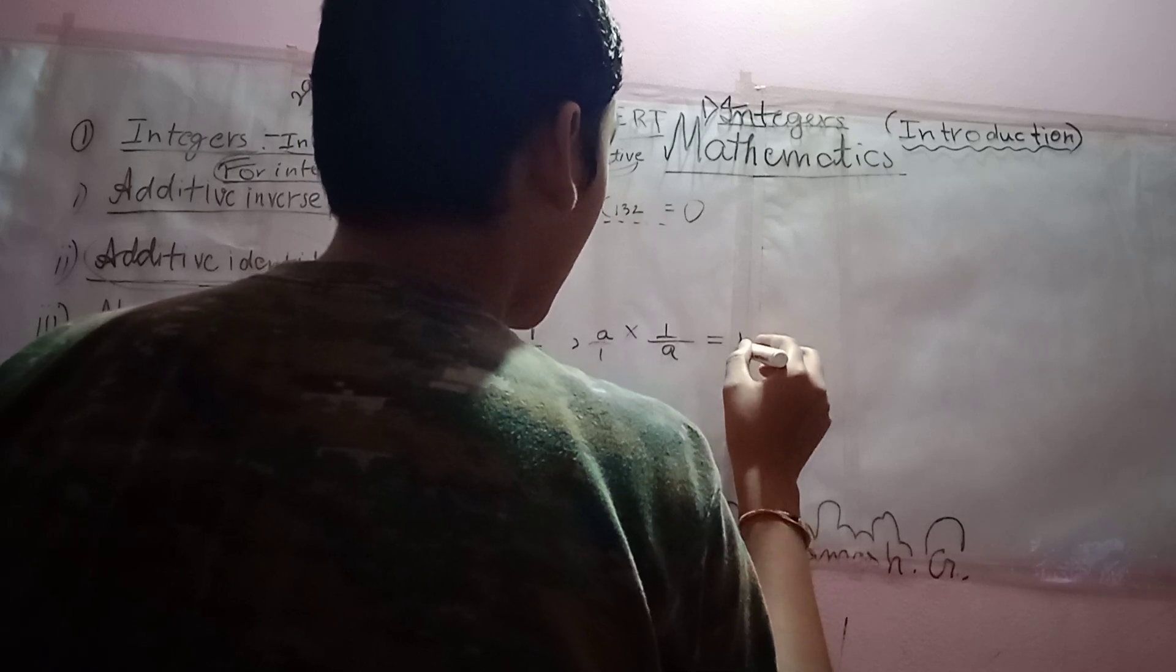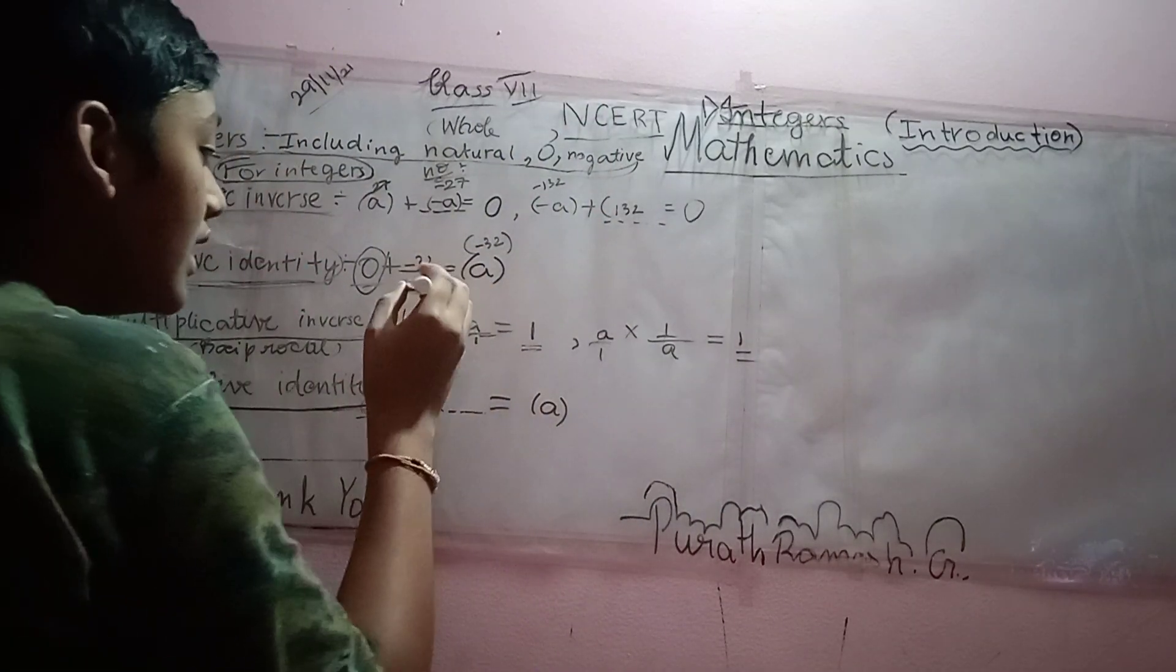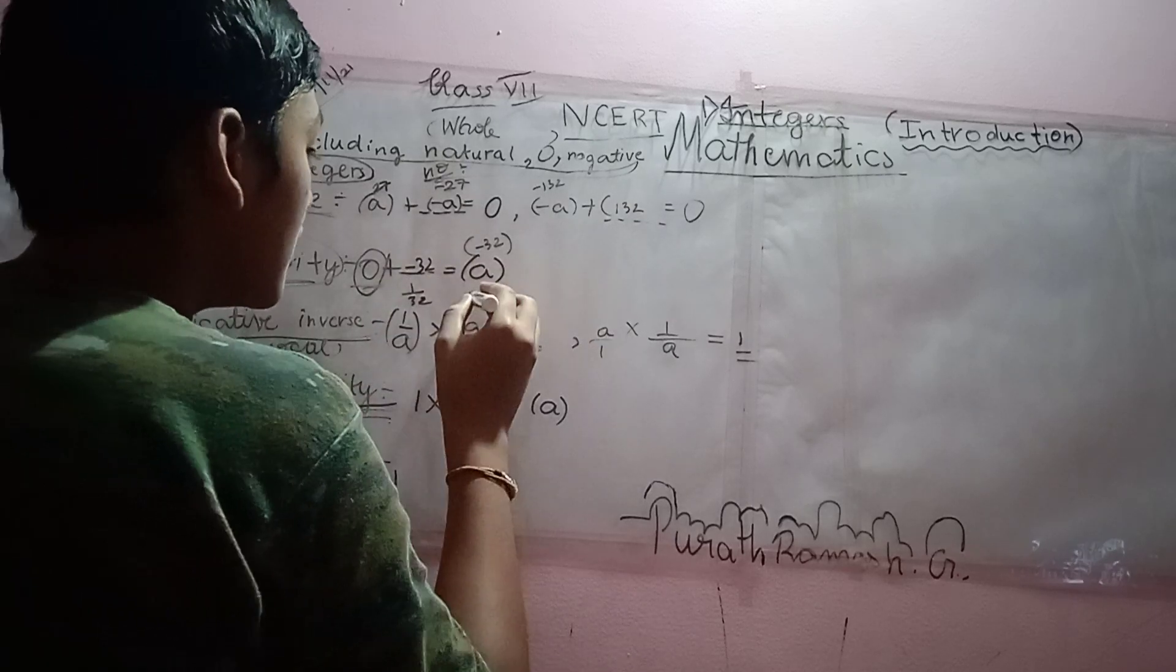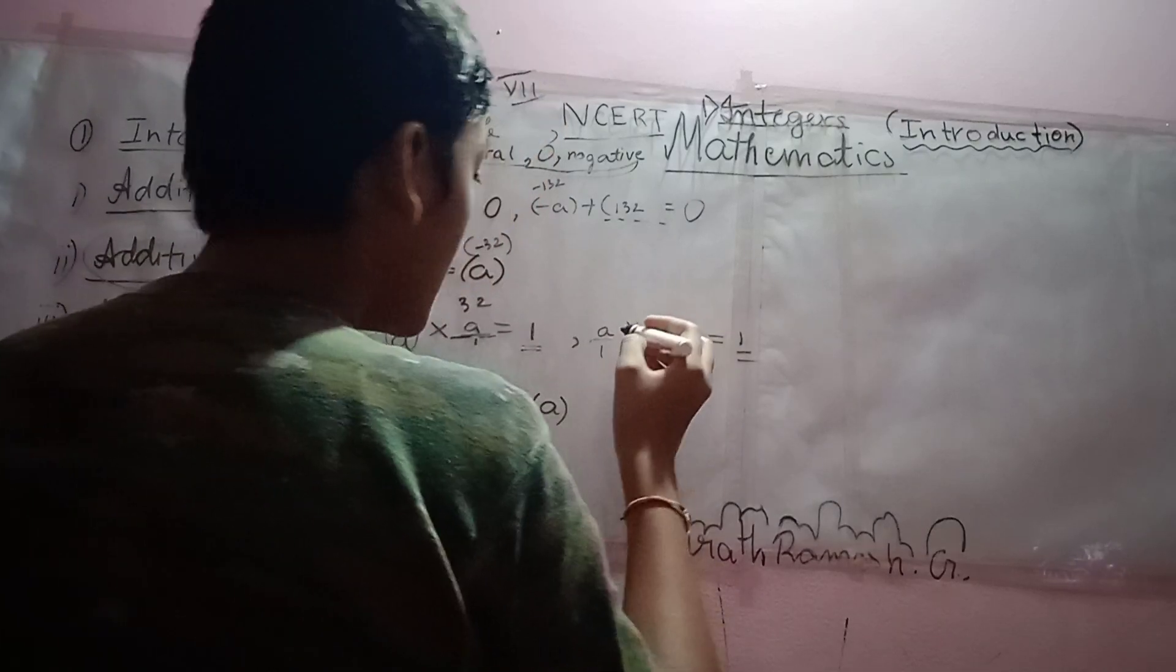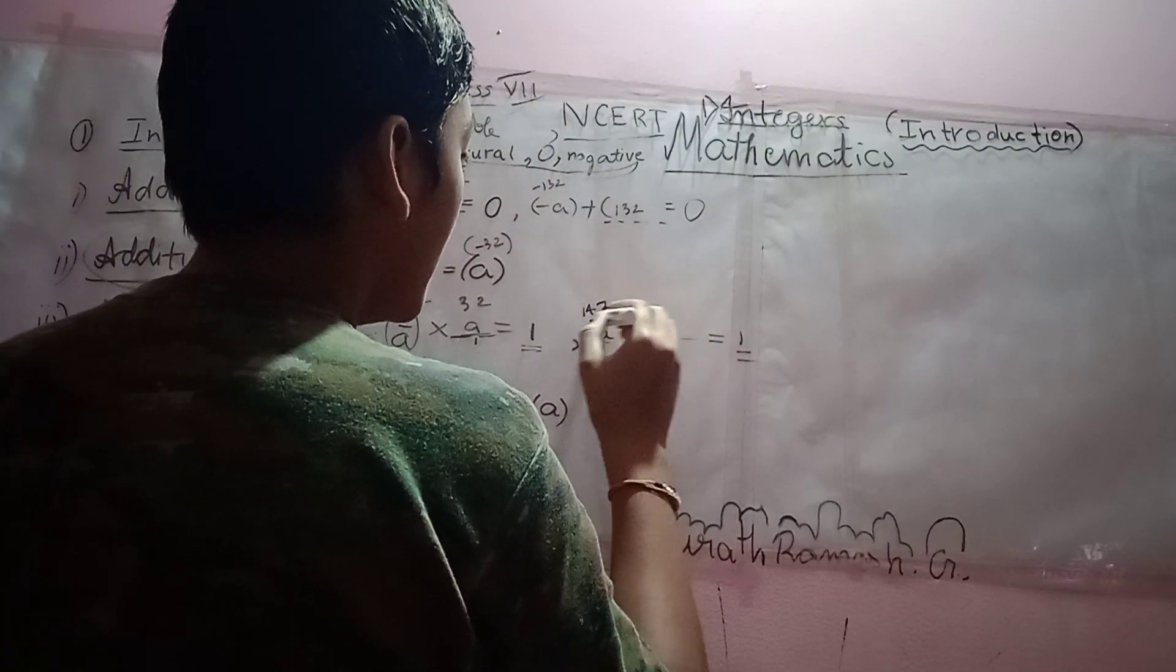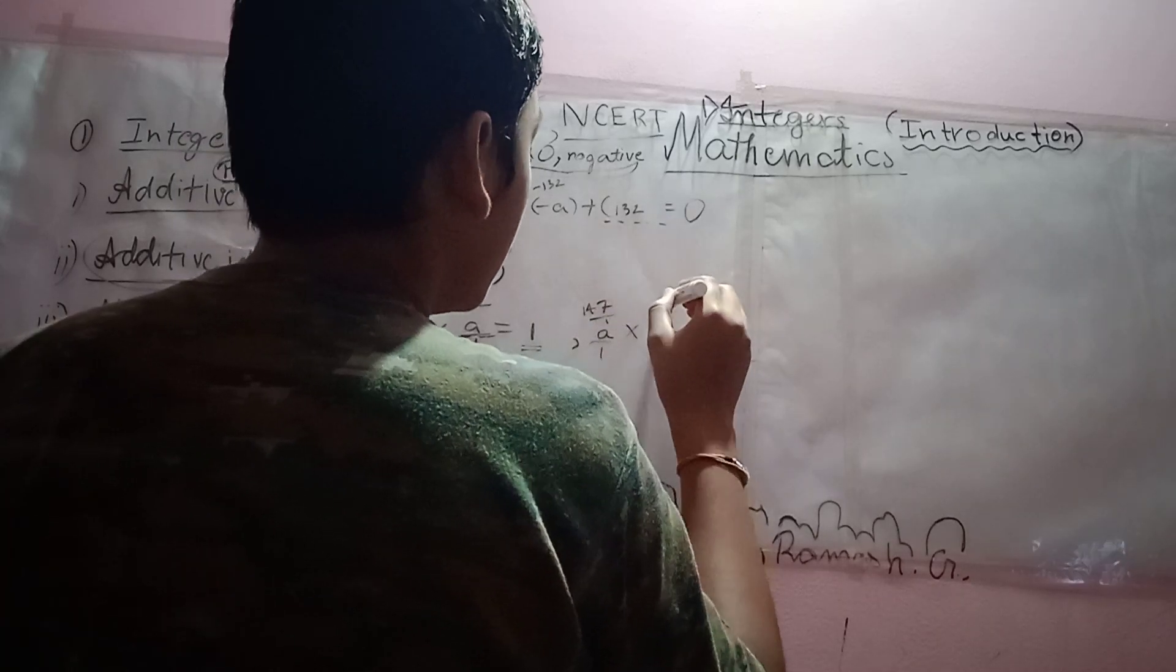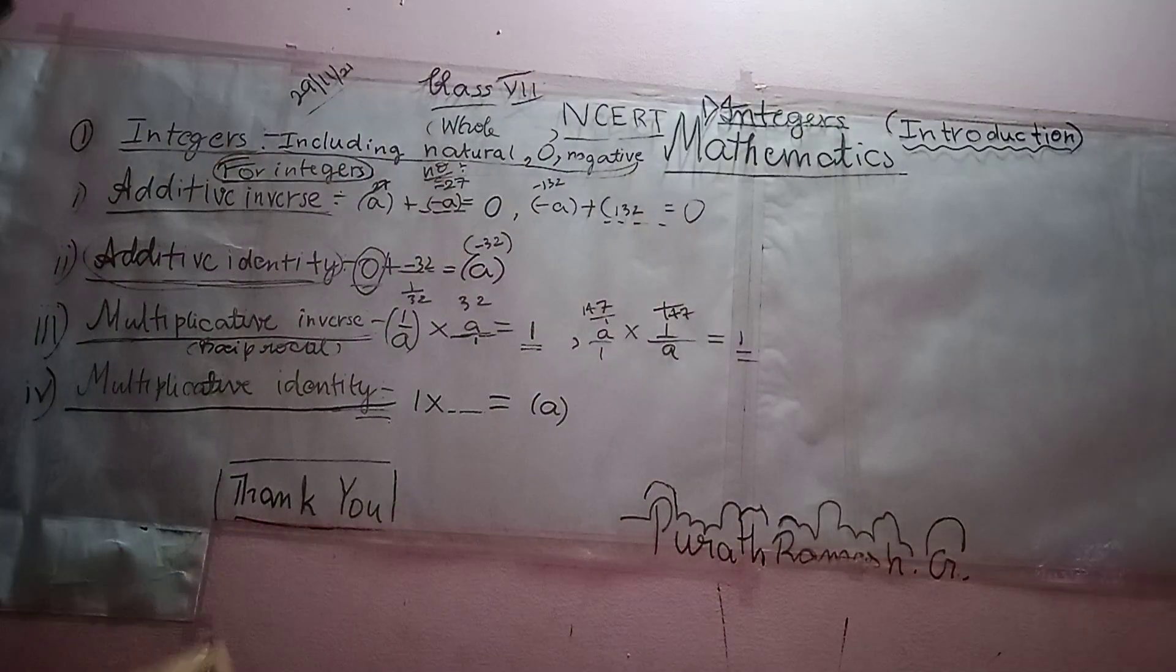We will get the answer as the product as 1. Let me take the value as 1 by 37. Then the reciprocal will be 32. It is 32, sorry. Then let me take 147 by 1. The answer is 1 by 147 which is the reciprocal of 147 by 1.